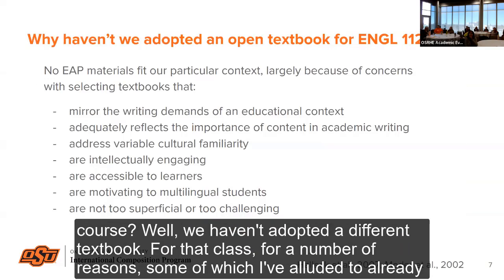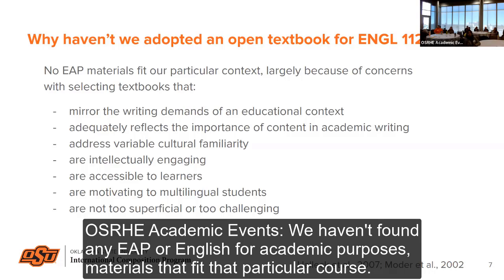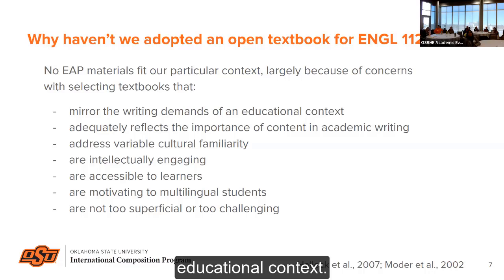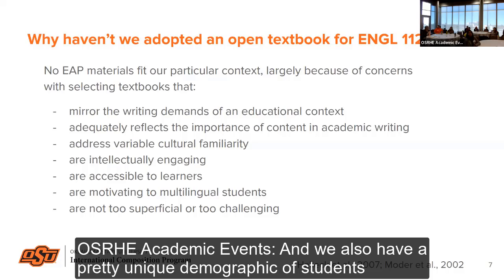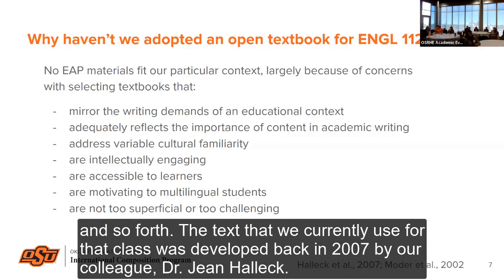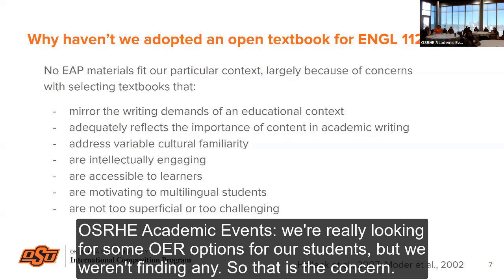We haven't adopted an open textbook for that class for a number of reasons — it's pretty unique and pretty different. We haven't found any EAP, or English for Academic Purposes, materials that fit that particular course. We need something that fits the writing demands of that specific educational context, and we have a unique demographic of students, so we need a text that addresses variable cultural familiarity and is intellectually engaging. The text we currently use was developed back in 2007 and is a little outdated, and it's also $42. So we were really looking for OER options.